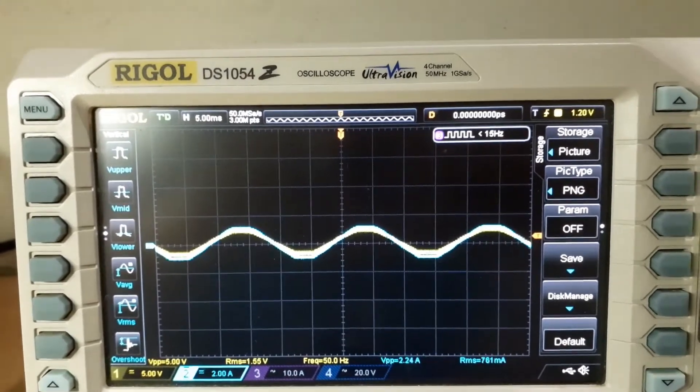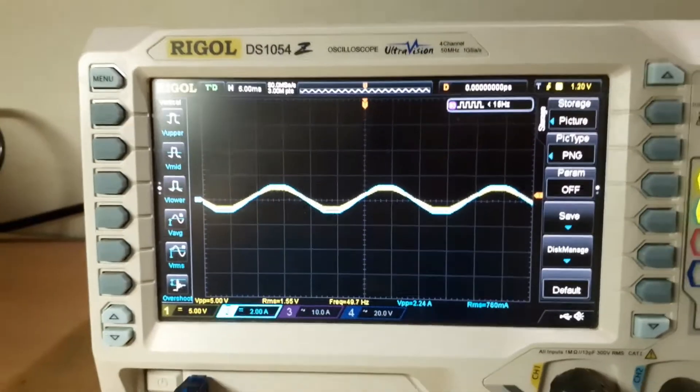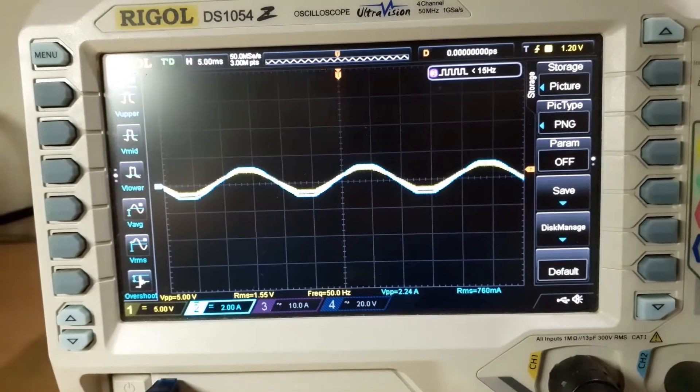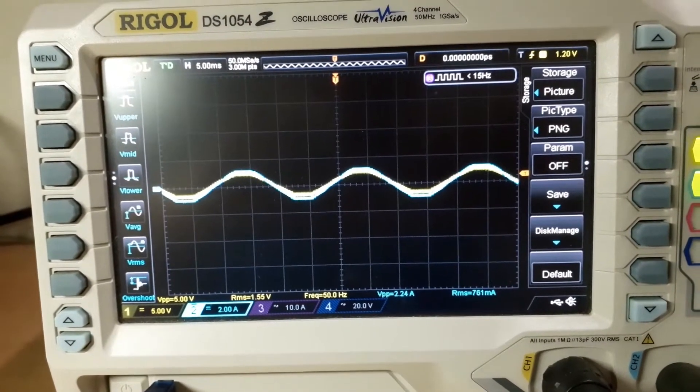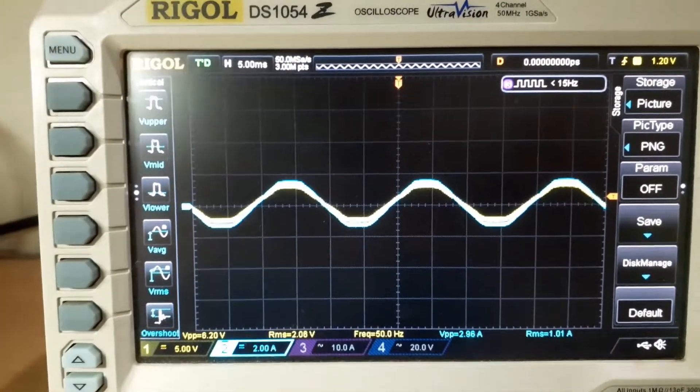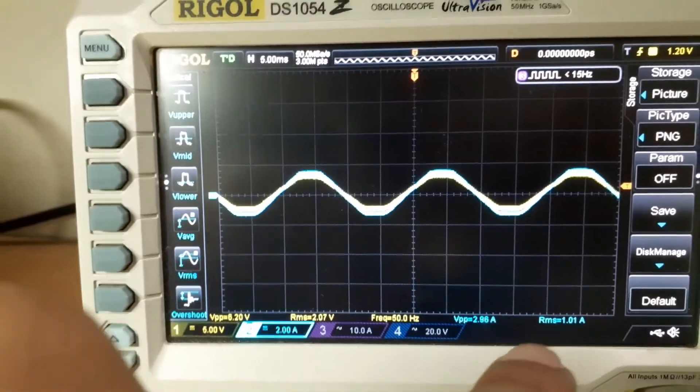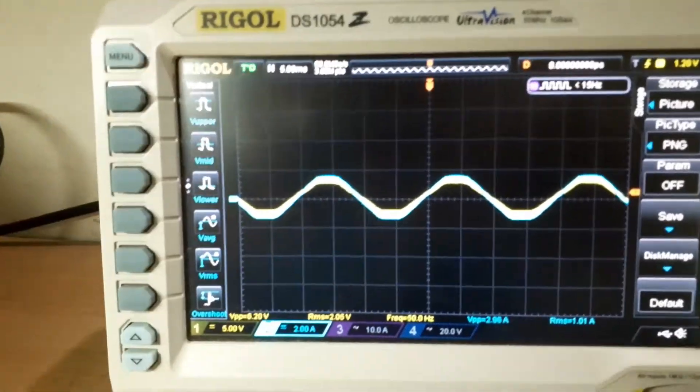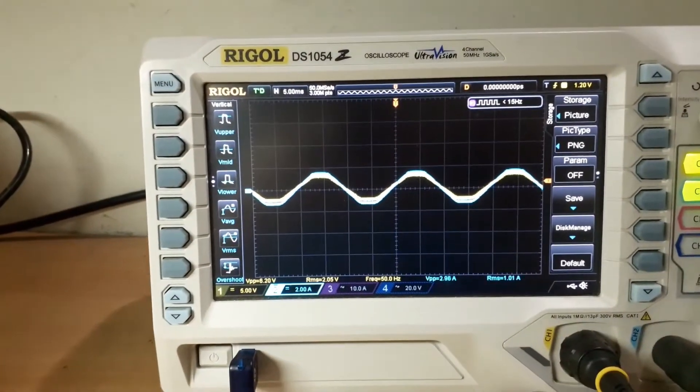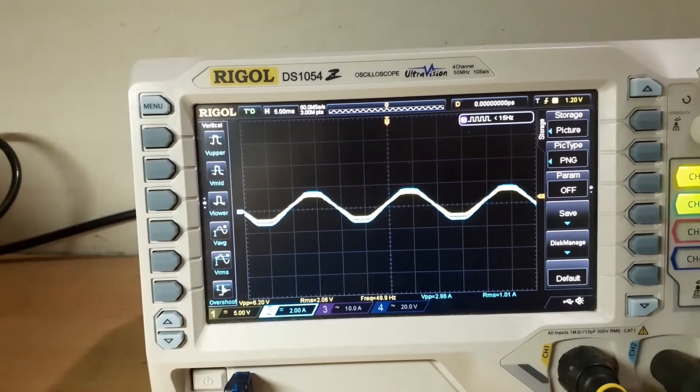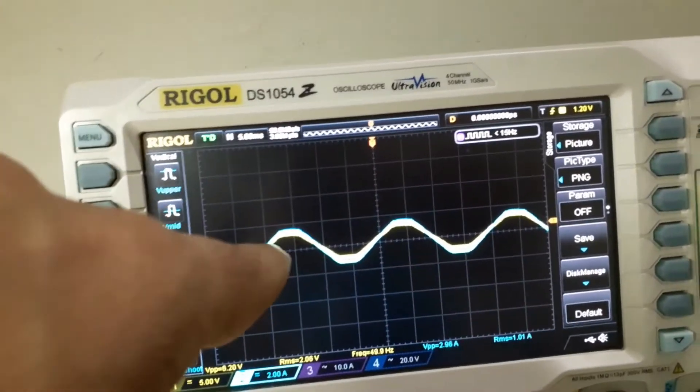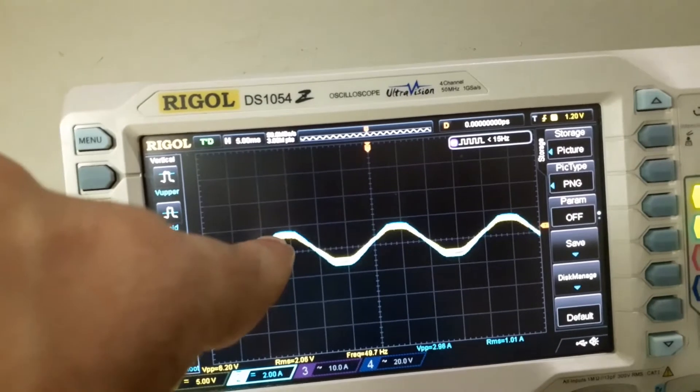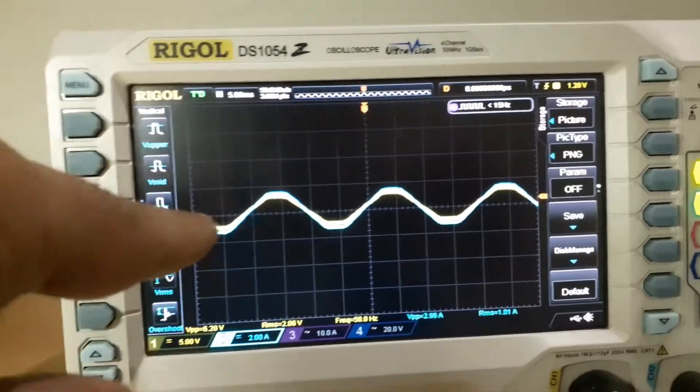So now we will set it to about one amp and let's see what's the difference. It is set to one amp and as you can see the waveforms are still more or less matching, and the output from the CT is about 4-point-some volts on the peak.